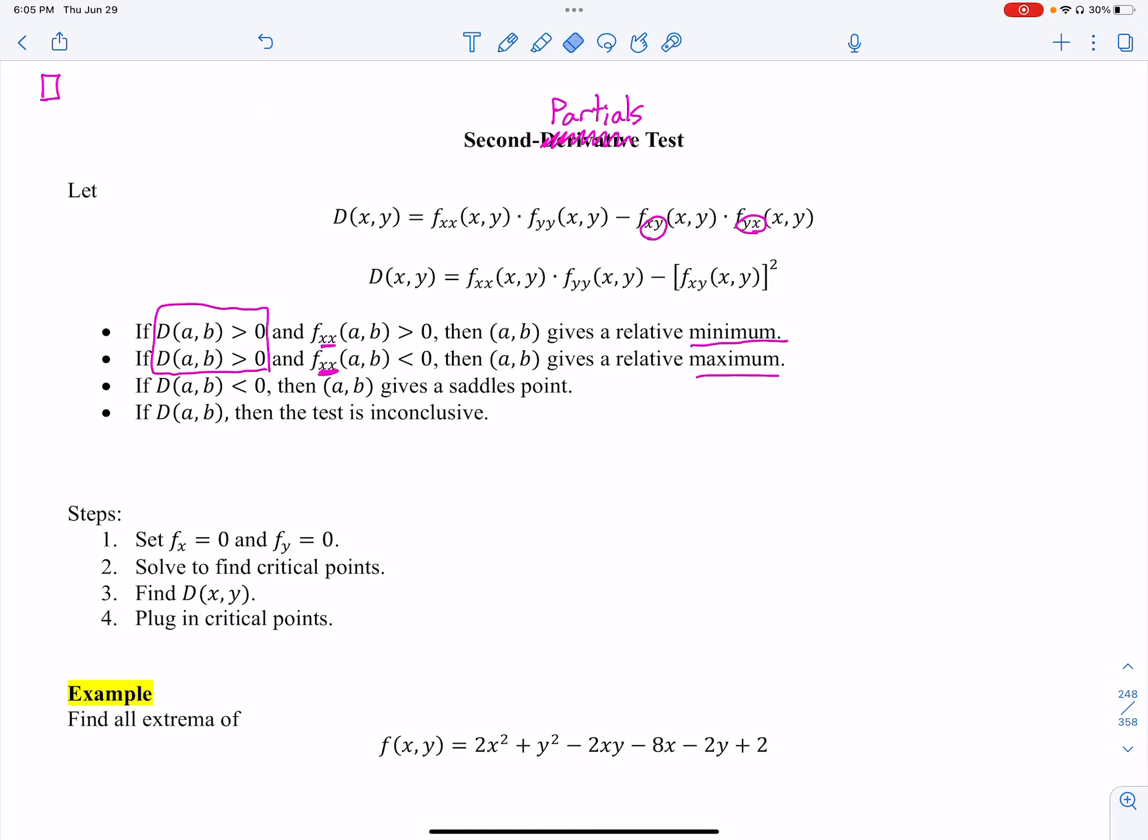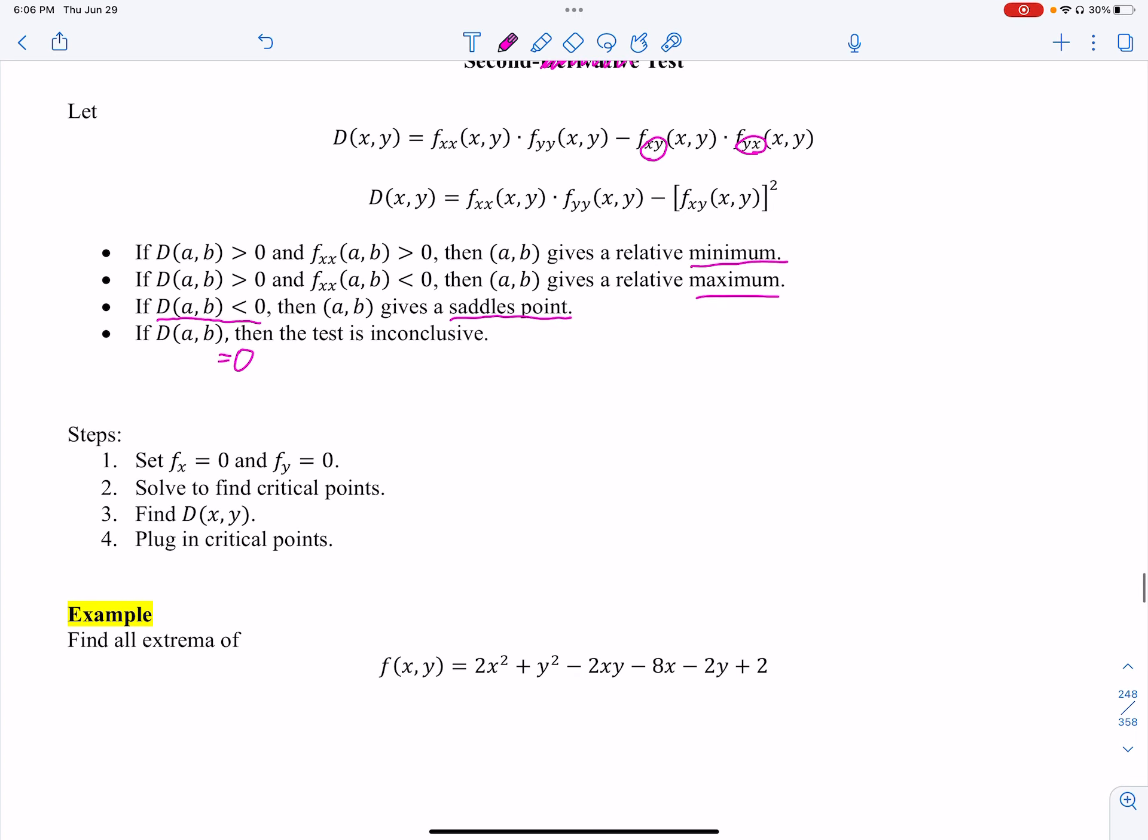That's only if the Hessian, this capital D, is greater than zero. If it's less than zero, then we automatically don't have to do anything else. It gives us a saddle point. And then this last one, if that's equal to zero, then the test is inconclusive. Remember inconclusive means it doesn't tell me anything. It doesn't tell me if there is one or if there isn't one. This thing is pretty easy to get memorized. After you do a few problems, you'll start getting it down.